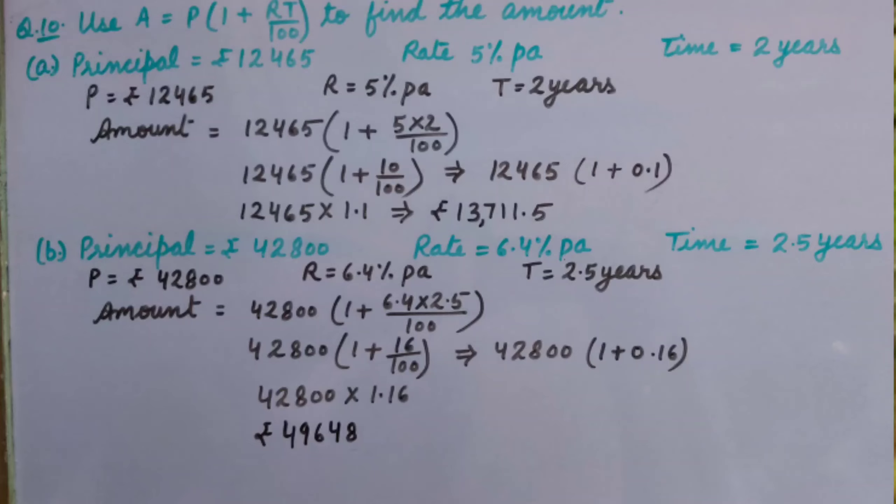So 12,465 × 1.1 equals rupees 13,711.5. Similarly, part (b): Principal rupees 42,800, rate 6.4% per annum, and time 2.5 years. We will insert the values in the formula.